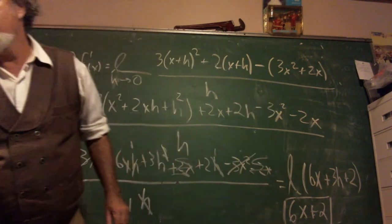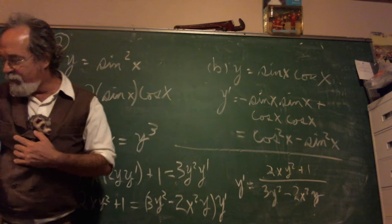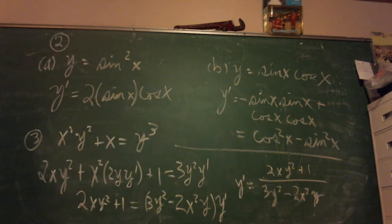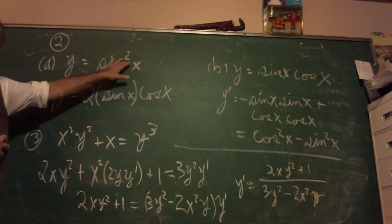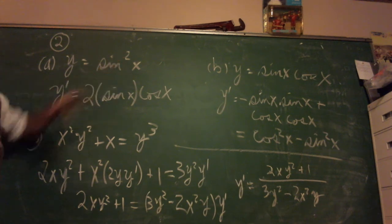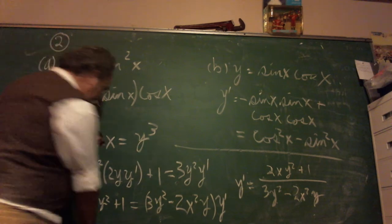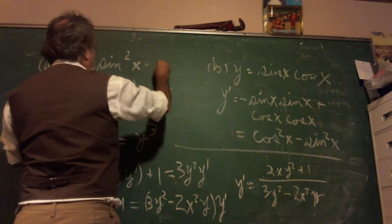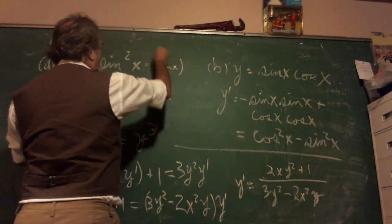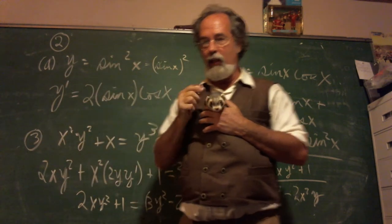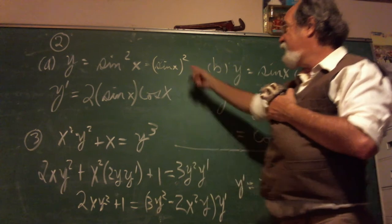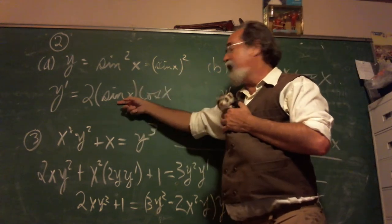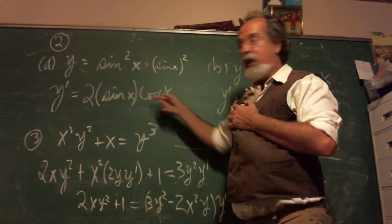Next problem. Problems 2 and 3. It's a chain rule because the outside is that second power and the inside is sine x. You guys are supposed to know that this is the same as having (sin x)². The two comes down, sine x to the first power, cosine x. Done, just leave it like that.